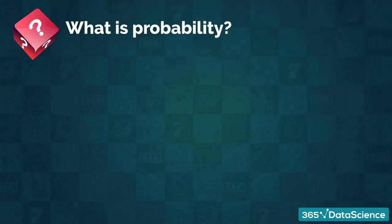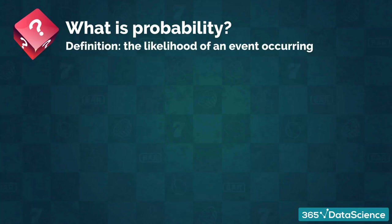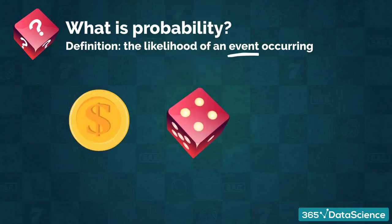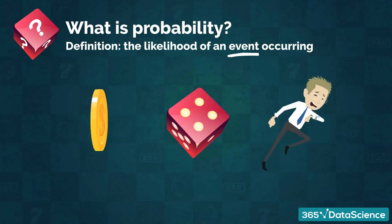Some of you might be wondering: what is this probability we're talking about? Essentially, probability is the chance of something happening. A more academic definition would be the likelihood of an event occurring. The word 'event' has a specific meaning when talking about probabilities. Simply put, an event is a specific outcome, or a combination of several outcomes. These outcomes can be pretty much anything: getting heads when flipping a coin, rolling a four on a six-sided die, or running a mile in under six minutes.